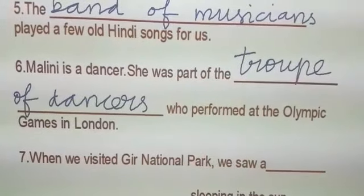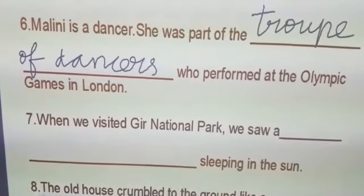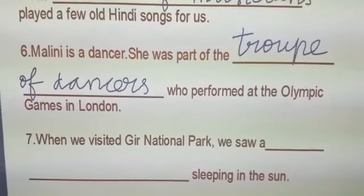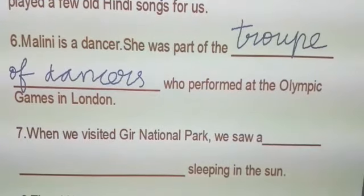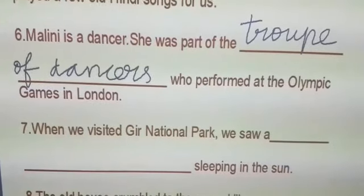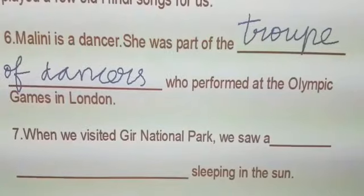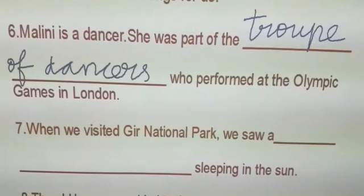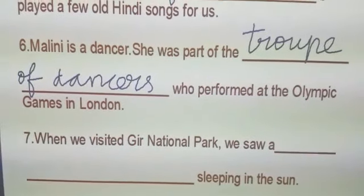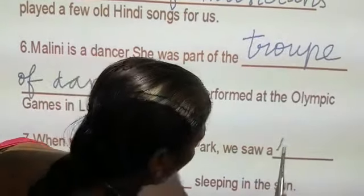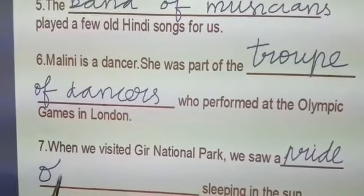Number seven: When we visited this national park, we saw a dash sleeping in the sand. Children, all went to the zoo or to the park. Very good. The options are: bunch of bananas, pile of clothes, pride of lions, pack of cards. What will you see in the national park? Very good, children — pride of lions. P-R-I-D-E, pride of lions.